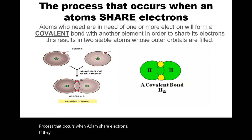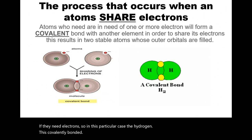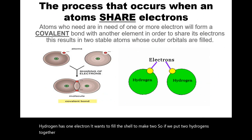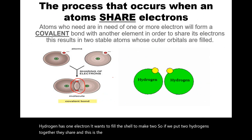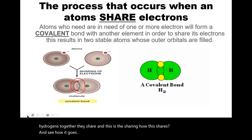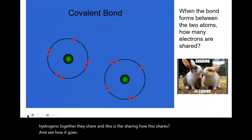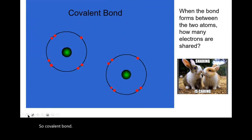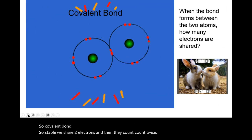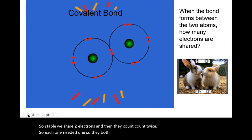The process occurs when atoms share electrons if they need electrons. Hydrogen is covalently bonded — it has one electron and wants to fill its shell to make two. If we put two hydrogens together, they share electrons. They share two electrons and each counts both — so each one needed one, and now they both have two, making them stable.